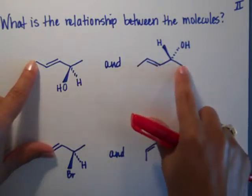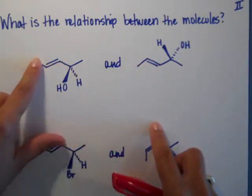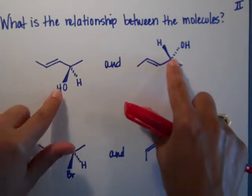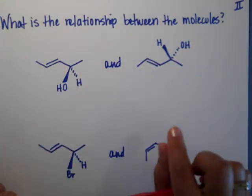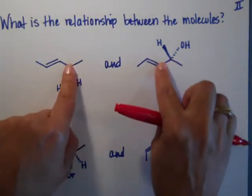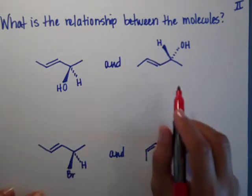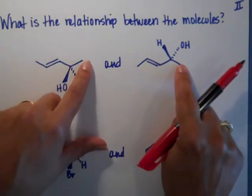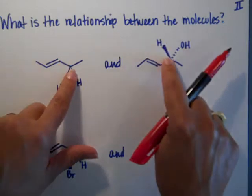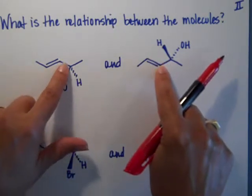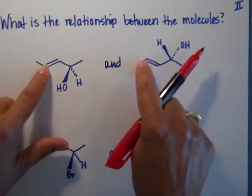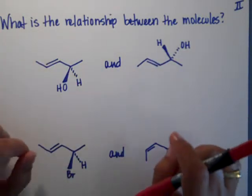I have 2-pentene right here. But there's an OH there and the OH has priority, so we should start numbering on this side. I have carbon number one, carbon number two has an OH and a hydrogen on both sides, double bonded carbon, double bonded carbon and a CH3. They're connected the same.